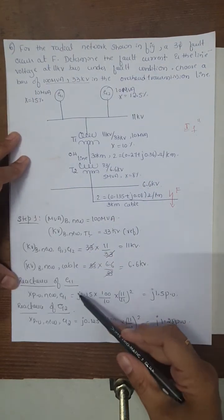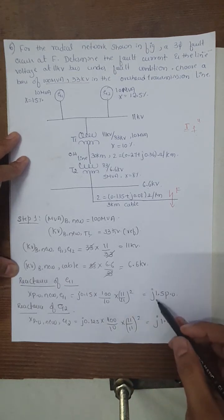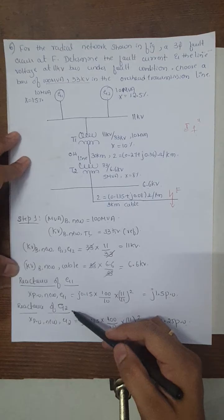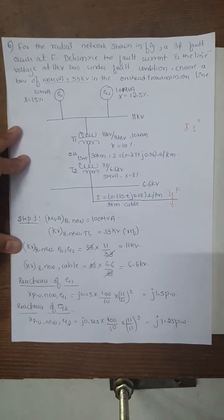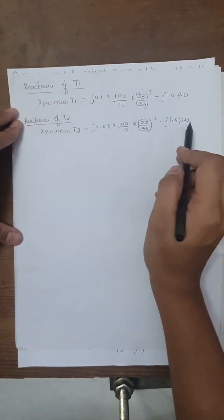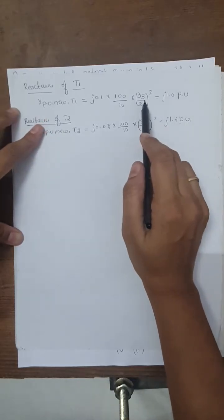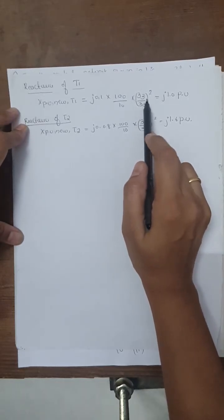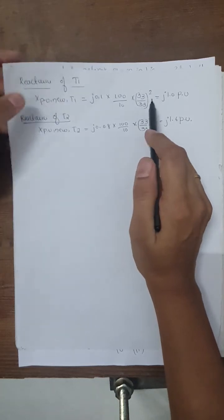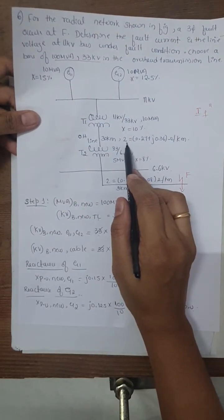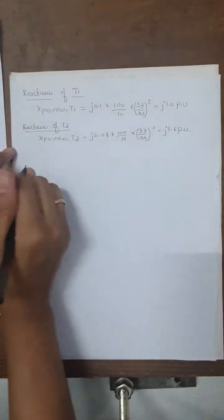The reactance for generator 1 is j1.5 per unit and for generator 2 is j1.25 per unit. For transformers T1 and T2, the reactances are j1.0 and j1.6 per unit respectively. Cross-check the base voltage calculation on both primary and secondary sides of the transformer. Next we calculate the impedance of the overhead transmission line, as the value is given as Z, not just X.